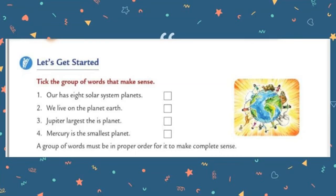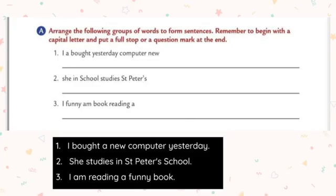Do it neatly and clearly in your grammar book. Let's do the second exercise: arrange the following group of words to form sentences. Remember to begin with a capital letter and put a full stop or question mark at the end. The words given are not arranged in proper order; we have to arrange them, always starting the first letter in capital.